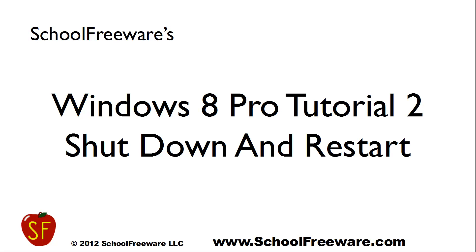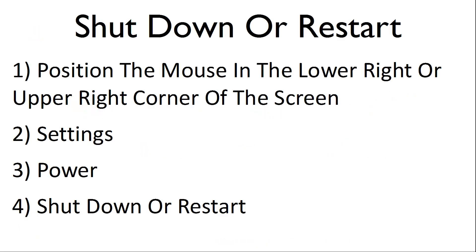Windows 8 Pro Tutorial 2: Shutdown and Restart. To shut down or restart Windows 8, position the mouse in the lower right or upper right corner of the screen. Then select Settings, followed by Power, and then either shut down or restart.